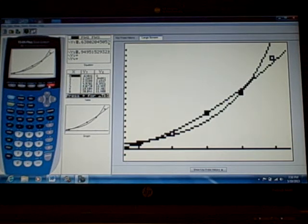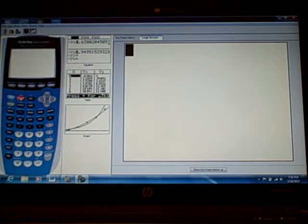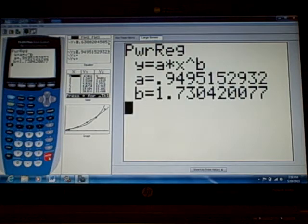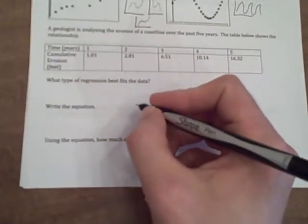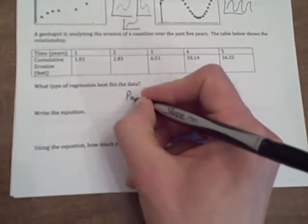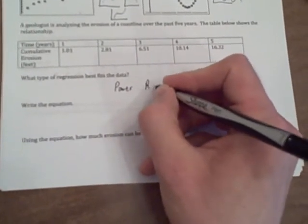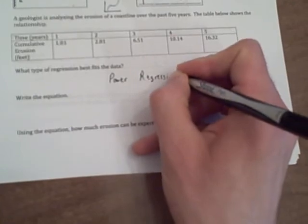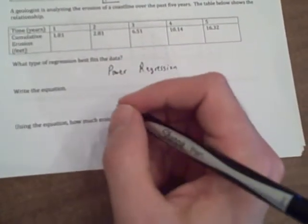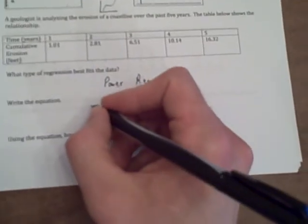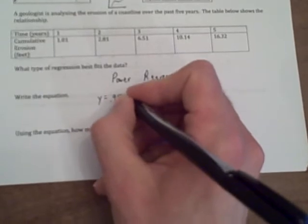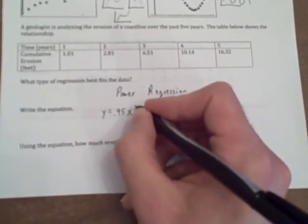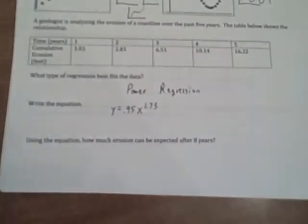So here's what we're going to do. We're going to write it down. Second quit and the last thing we typed was this and it gave us that equation. Right here we're going to put power regression. When we write the equation we'll look at the screen and put y equals a which is 0.95 x to the 1.73.